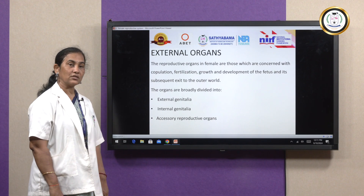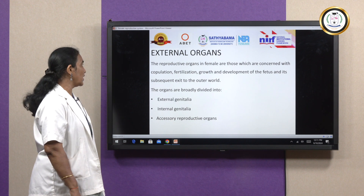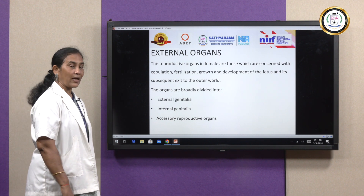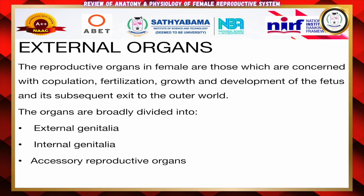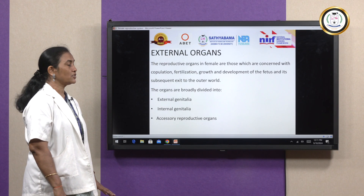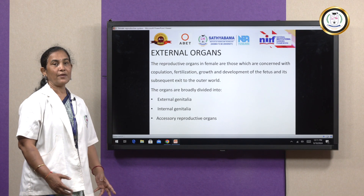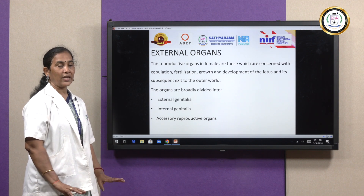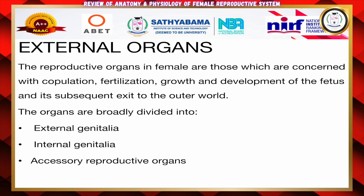The female reproductive organs are connected with four functions: copulation, fertilization, growth and development of the fetus, and its subsequent exit to the outer world. These functions help in the development of the fetus throughout the period. The organs are broadly divided into external genitalia, internal genitalia, and accessory reproductive organs.